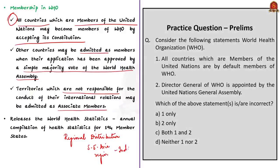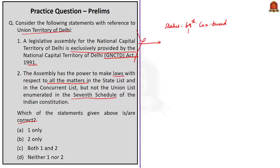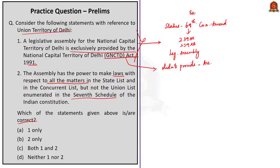Practice question: With reference to the union territory of Delhi — Statement 1 says a legislative assembly for the NCT of Delhi is exclusively provided by the NCT of Delhi Act of 1991; Statement 2 says the assembly has power to make laws on all matters in the State List and Concurrent List but not the Union List. Statement 1 is incorrect because the status of Delhi is an outcome of the 69th Constitutional Amendment Act of 1991, which inserted Articles 239AA and 239AB providing for a legislative assembly for Delhi. The GNCTD Act was passed simultaneously to supplement these constitutional provisions.